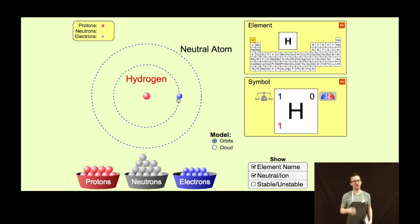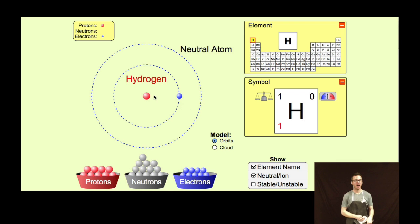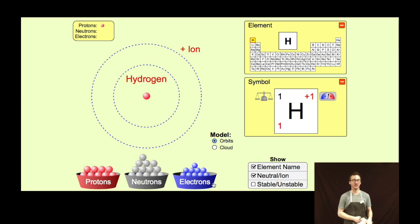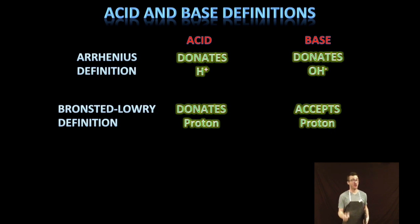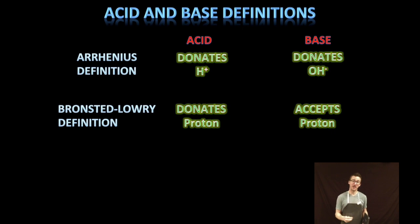Think back to when we counted protons, neutrons, and electrons. A neutral hydrogen atom has one proton, no neutrons, and one electron. The hydrogen ion is simply the neutral hydrogen atom without its electron — in other words, it's a proton. For bases, this is where the definitions really diverge: the Arrhenius definition requires donating hydroxide ions, whereas the broader Bronsted-Lowry definition classifies anything that accepts protons or hydrogen ions as a base.